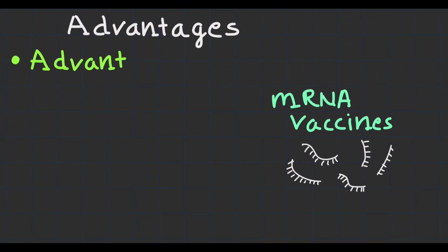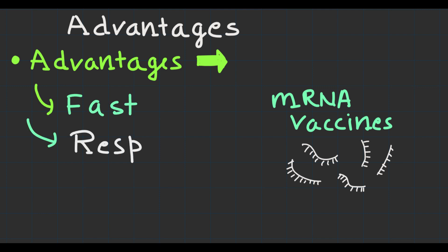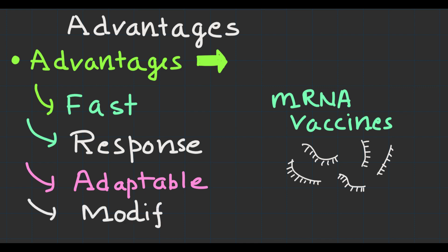What are the advantages of mRNA vaccines? mRNA vaccines offer several advantages over traditional vaccine approaches. They can be developed and manufactured quickly, allowing for a rapid immune response to emerging pathogens. Additionally, mRNA vaccines are adaptable, making it easier to modify them to address new variants of diseases.